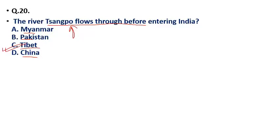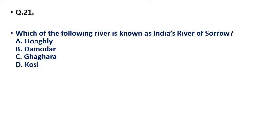Question 21: Which of the following rivers is known as India's River of Sorrow — (a) Hooghly, (b) Damodar, (c) Ghagara, (d) Kosi?